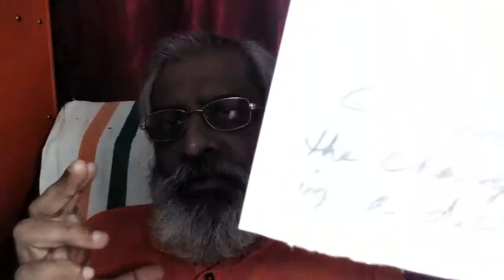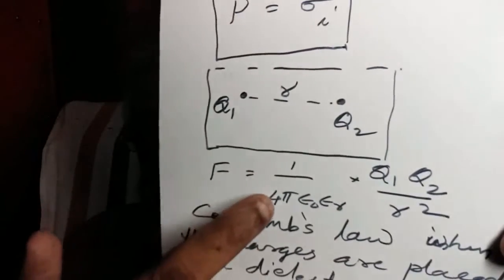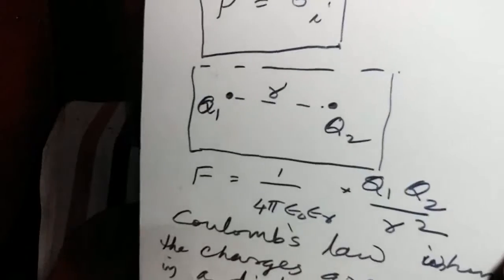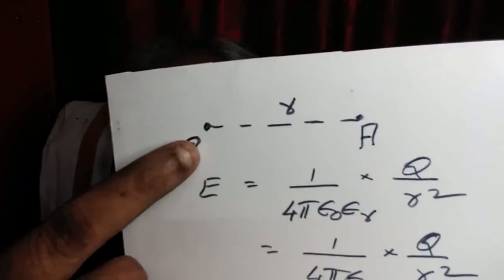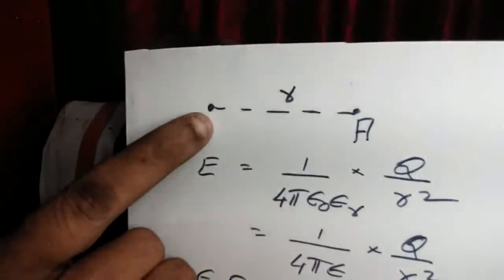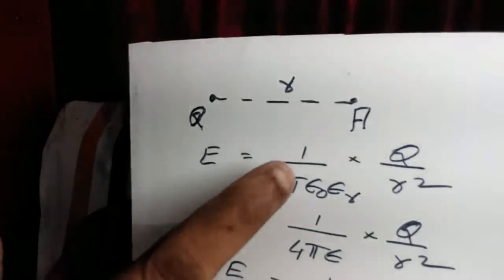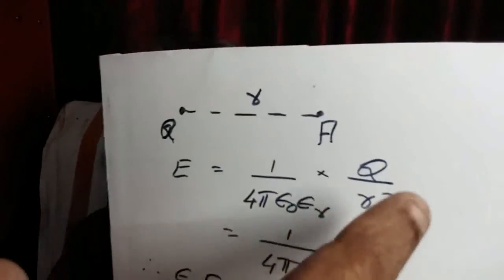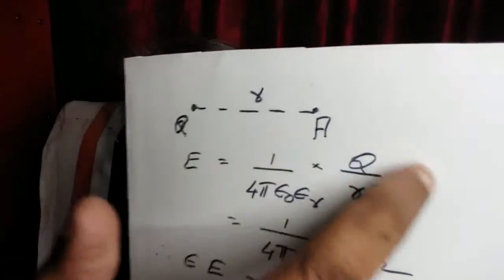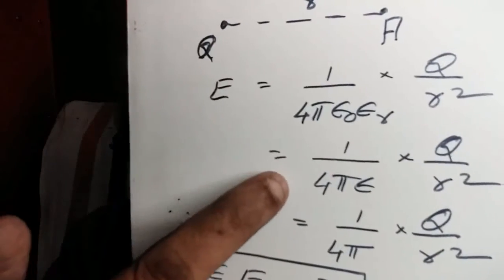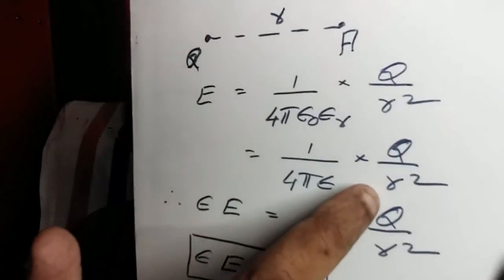So in general, if the surrounding medium is not free space, we write Coulomb's law as 1 by 4 pi epsilon 0 epsilon r into q1 q2 by r square. This epsilon r will appear everywhere where permittivity is a factor. For example, electric intensity due to a point charge q2 is E equals 1 by 4 pi epsilon 0 epsilon r into q2 by r square, or E equals 1 by 4 pi epsilon into Q by R square.